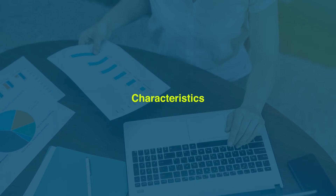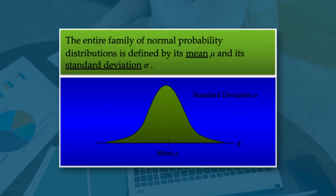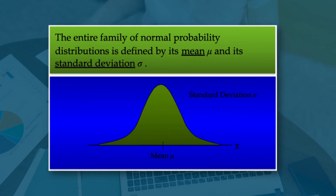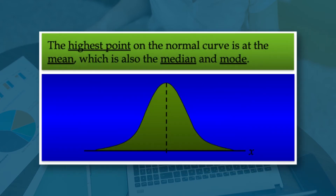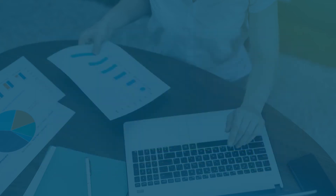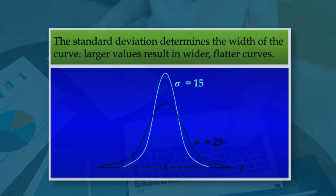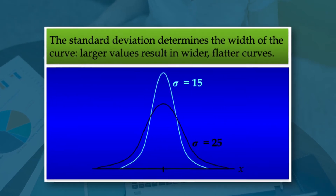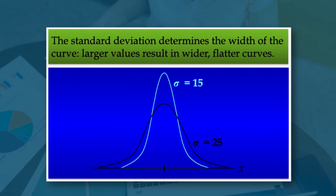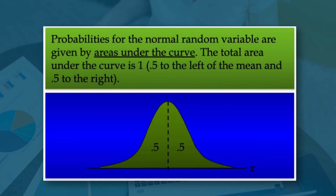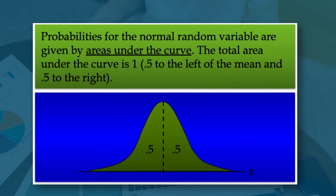Characteristics of normal distribution: the distribution is symmetric, its skewness measure is 0, and the entire family of normal probability distributions is defined by mean μ and standard deviation σ. The highest point on the normal curve is at the mean, which is also the median and mode. The mean can be any numerical value — negative, 0, or positive. The standard deviation determines the width of the curve — larger values result in wider, flatter curves. Probabilities for the normal random variable are given by areas under the curve. The total area under the curve is 1, with 0.5 to the left and 0.5 to the right of the mean.